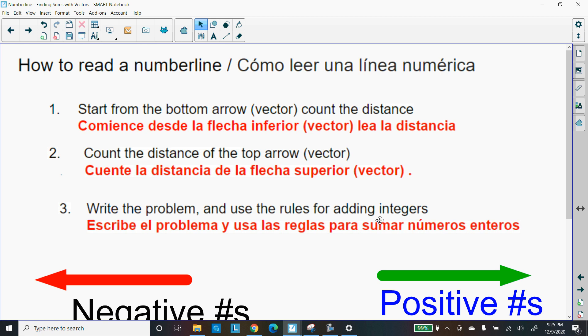Remember, adding integers with the same sign, the answer will be your sum, and keep the same sign. When you have different signs, when you're trying to add them, you have to subtract, unfortunately, because the signs are different, and then choose the sign of the larger digits number.